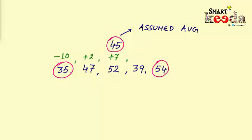Fourth number is 39 and it is 6 less than the assumed average, so we'll write minus 6 here. And the last number which is 54, it is 9 more than the assumed average, so we'll write plus 9 here.